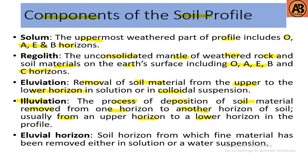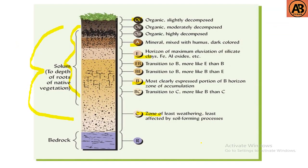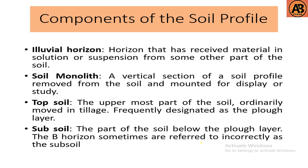An eluviated horizon is a soil horizon from which fine material has been removed, either in solution or in water suspension. An illuviated horizon is a horizon that has received material in solution or suspension from some other part of the soil.